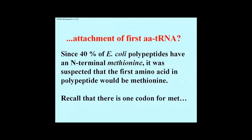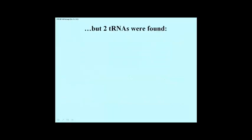From the genetic code dictionary, there is one codon for the amino acid methionine, and this is important for understanding the next bit of investigation. Several researchers found that in fact there were two transfer RNAs for methionine. You would have predicted there would only be one, since you have only one codon — you would only need one methionine-tRNA with its appropriate anti-codon. But two of them were found.